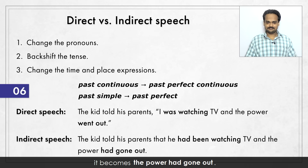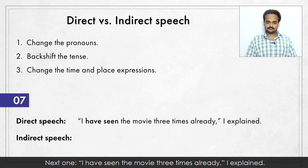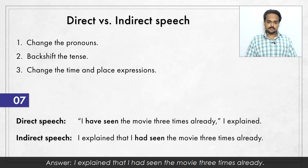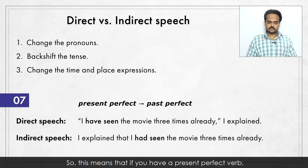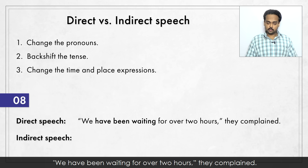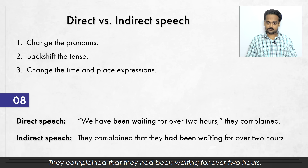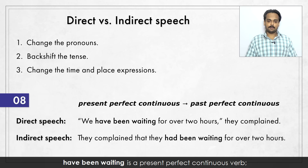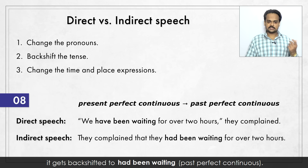Next one: "I have seen the movie three times already," I explained. I explained that I had seen the movie three times already. "Have seen" becomes "had seen". So if you have a present perfect verb, it changes to the past perfect when you backshift it. Next: "We have been waiting for over two hours," they complained. They complained that they had been waiting for over two hours. "Have been waiting" is a present perfect continuous verb – it gets backshifted to "had been waiting", past perfect continuous.